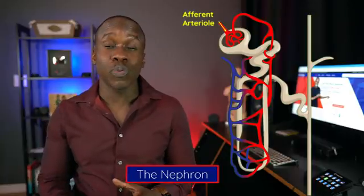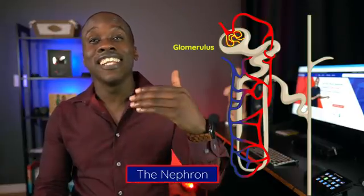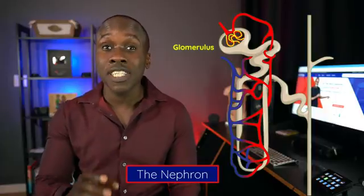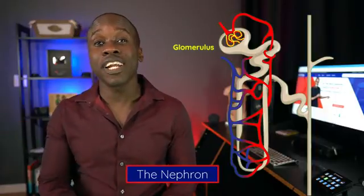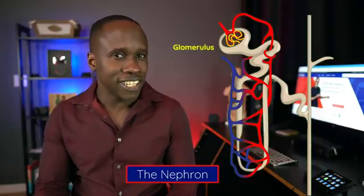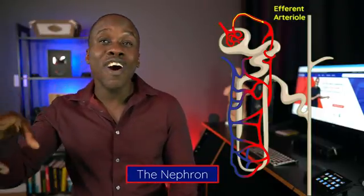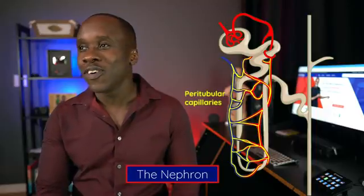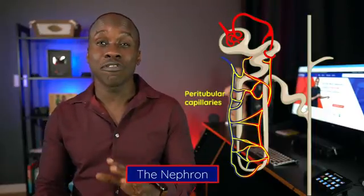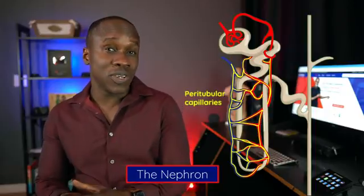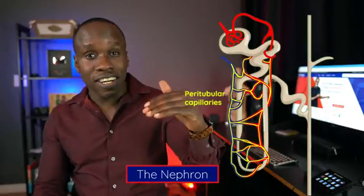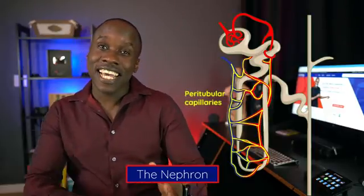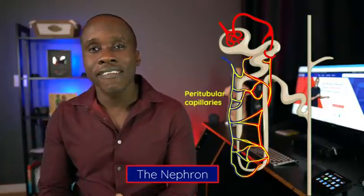From the afferent arterioles, we're going to get to a very important structure called the glomerulus. This is where the filtration is happening — we'll go into much more detail on this in later videos. From there, we go via the efferent arterioles, taking the blood from the glomerulus down into an extensive network of capillaries called the peritubular capillaries. In the nephron, we have the afferent arterioles going into the glomerulus, then into the efferent arterioles, and down into this extensive capillary bed called the peritubular capillaries.